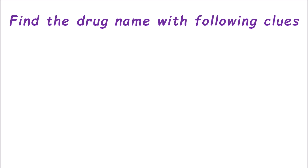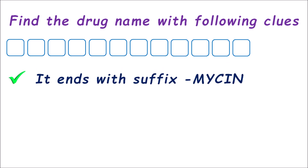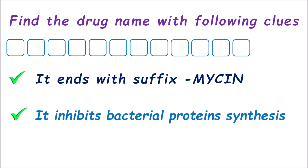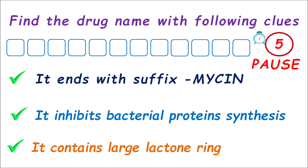First one: find the drug name with the following clues. These are the blocks in which we have to fill the drug name. The given clues are: first, it ends with the suffix '-mycin'; second, it inhibits bacterial protein synthesis; third, it contains a large lactone ring. So what is the name of the drug? You can think about the right answer — you have five seconds, or you can pause this video.